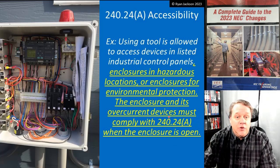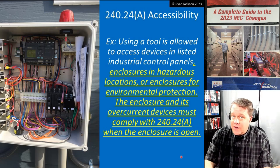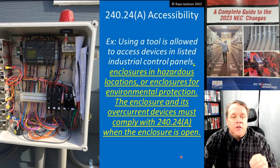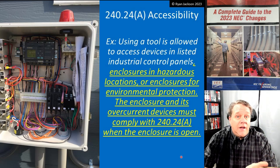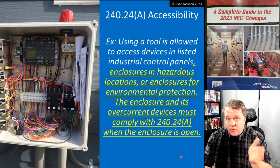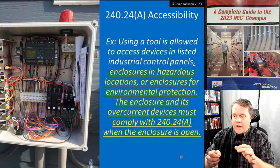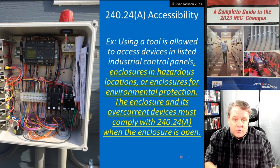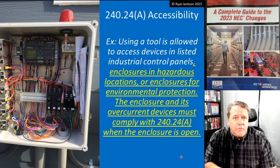There's an exception: using a tool is allowed to access devices in listed industrial control panels — a screwdriver, nut driver, ratchet — or enclosures in hazardous locations. Have you ever seen an explosion-proof panel board? You don't buy those at Home Depot. In order to get to them, you've got to unbolt everything, so yes, you're going to have to use a tool.